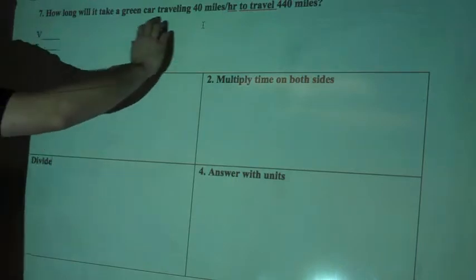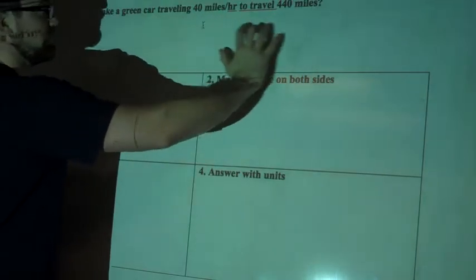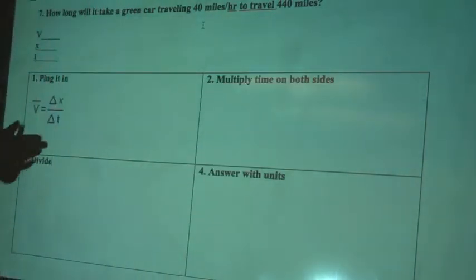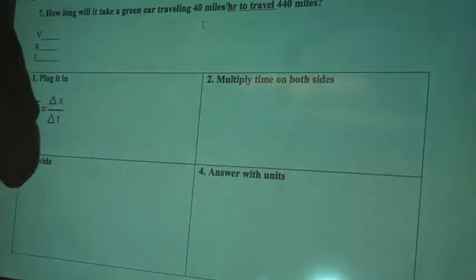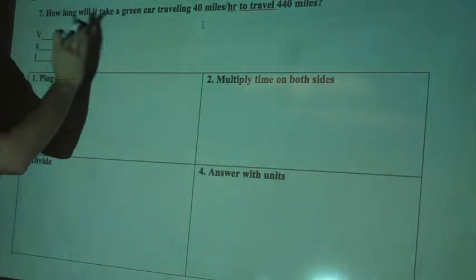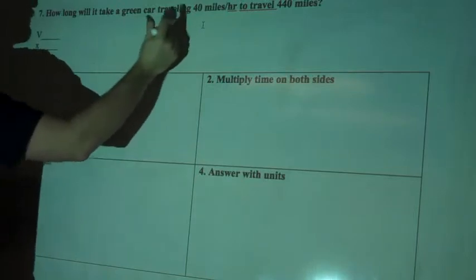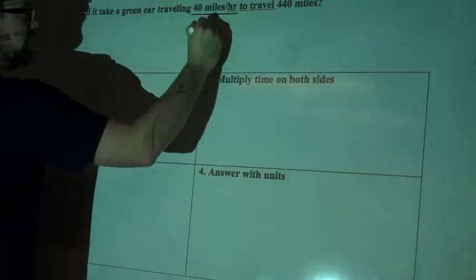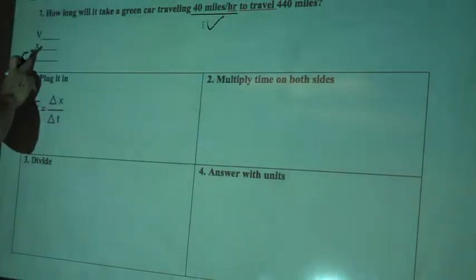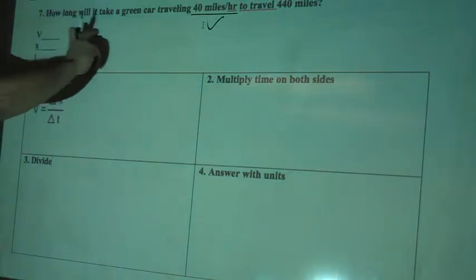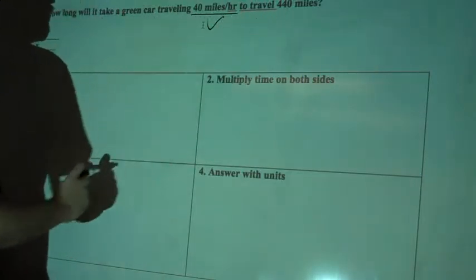So first off, how long will it take a green car traveling 40 miles per hour to travel 440 miles? The velocity, I'm looking for my V, that'll be a distance over a unit of time. So 40 miles per hour is a velocity. And then distance, so my X or change in X, to travel 440 miles.